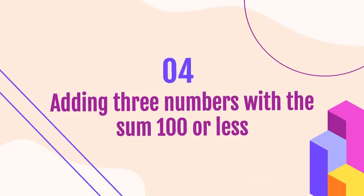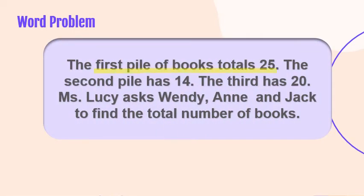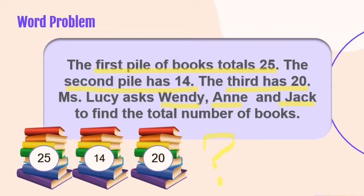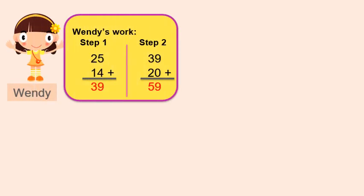To our last lesson, lesson number four: adding three numbers with a sum of 100 or less. Word problem: the first pile of books totals twenty-five, the second pile has fourteen, and the third has twenty. Miss Lucy, the teacher, asked Wendy, Ann, and Jack to find the total number of books. Wendy's work — step one: twenty-five books plus fourteen books equals thirty-nine books. Step two: thirty-nine plus twenty books equals fifty-nine books.